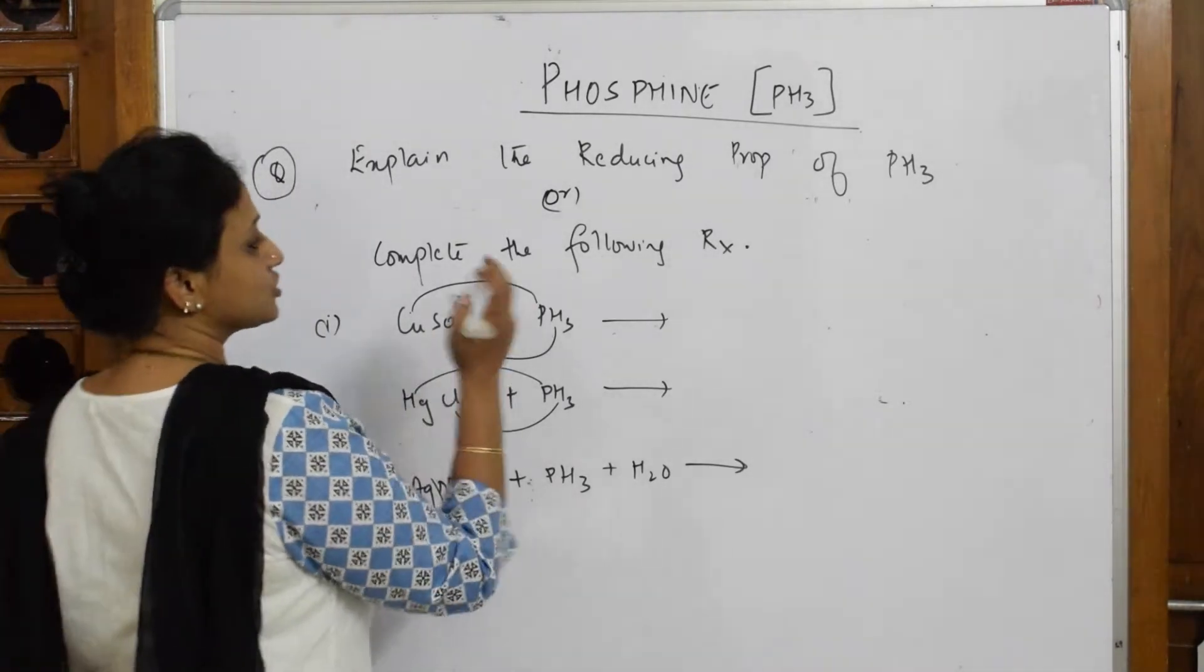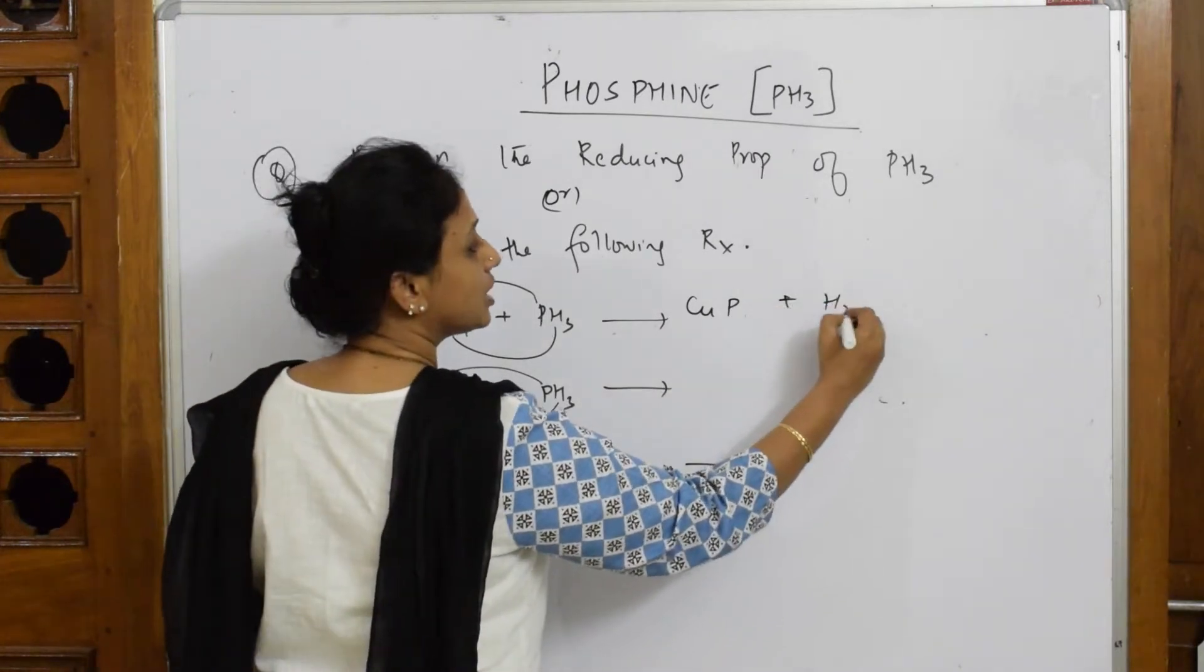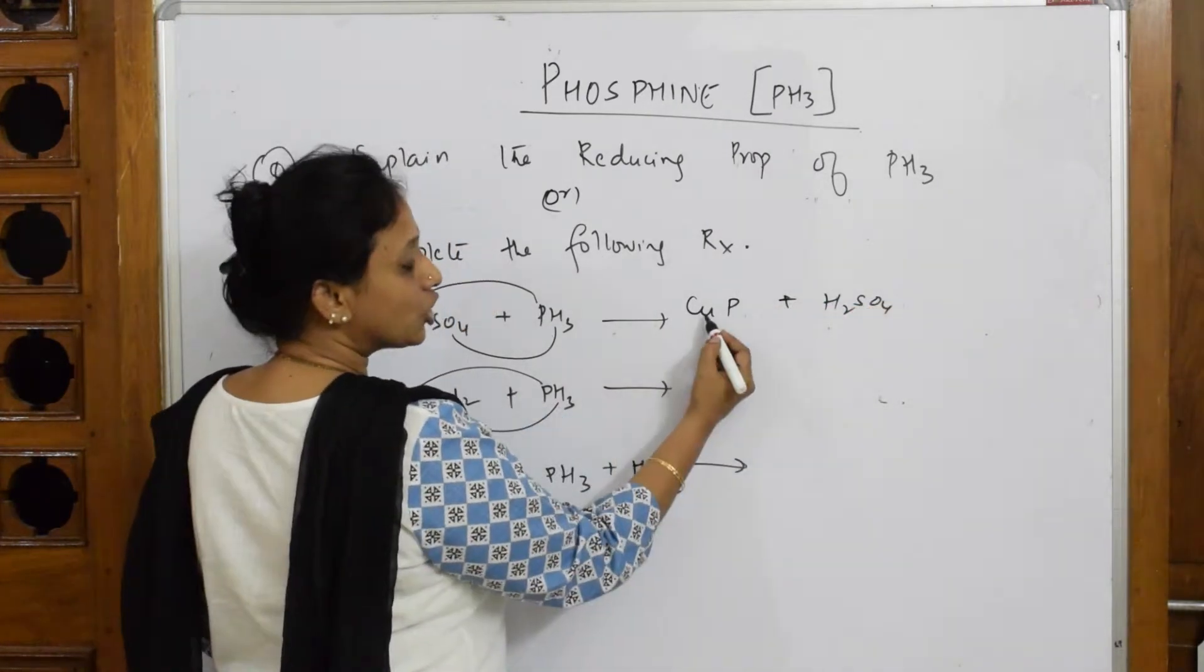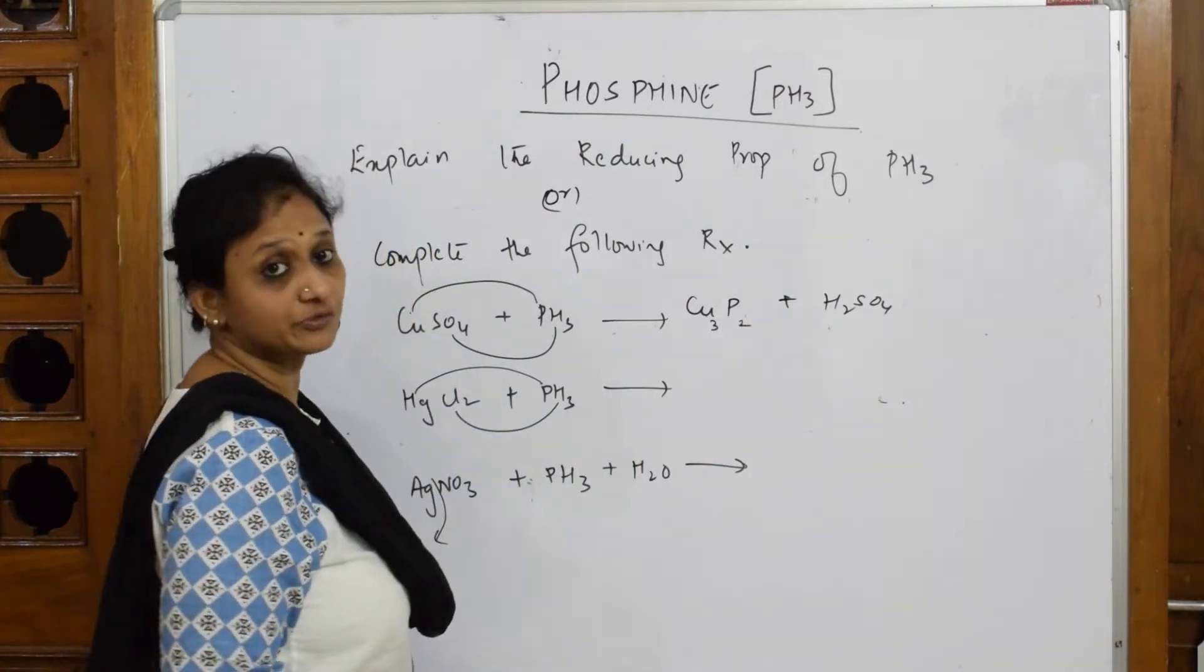Let us see. The copper phosphide, CUP. Then H2SO4. How should I write this? CUP, copper valency is 2, phosphorus valency is 3. Copper phosphide.